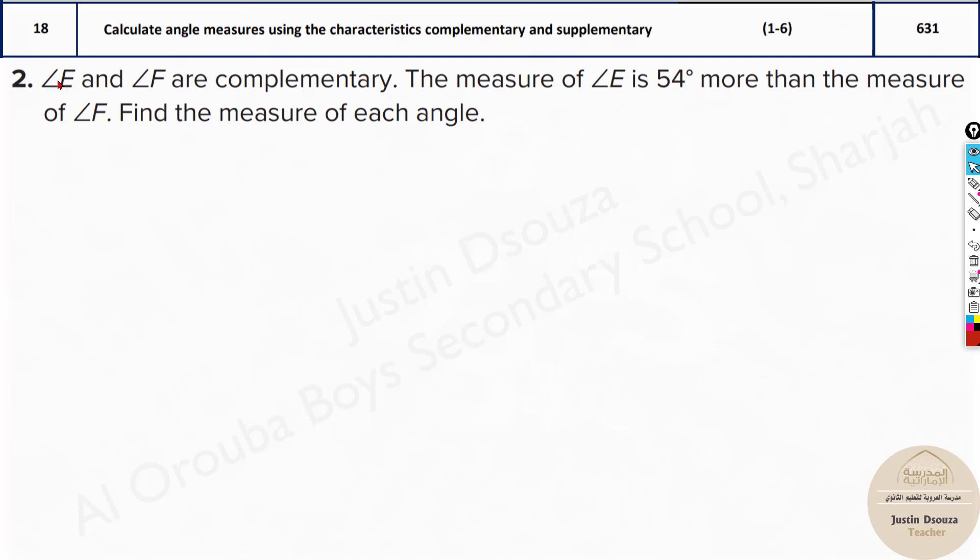Now what about this one? Angle E and angle F are complementary. The measure of E is 54 degrees more than the measure of F. We know that they both are complementary, so when you sum them up, angle E plus angle F, you must get 90 degrees. Complementary means 90. Supplementary is 180. The measure of E is 54 degrees more than the measure of F. So let's consider x to be angle F. So what is angle E? 54 more than F, so it will be x plus 54. Now you can just substitute: E is x plus 54 degrees plus F, that should be 90 degrees.